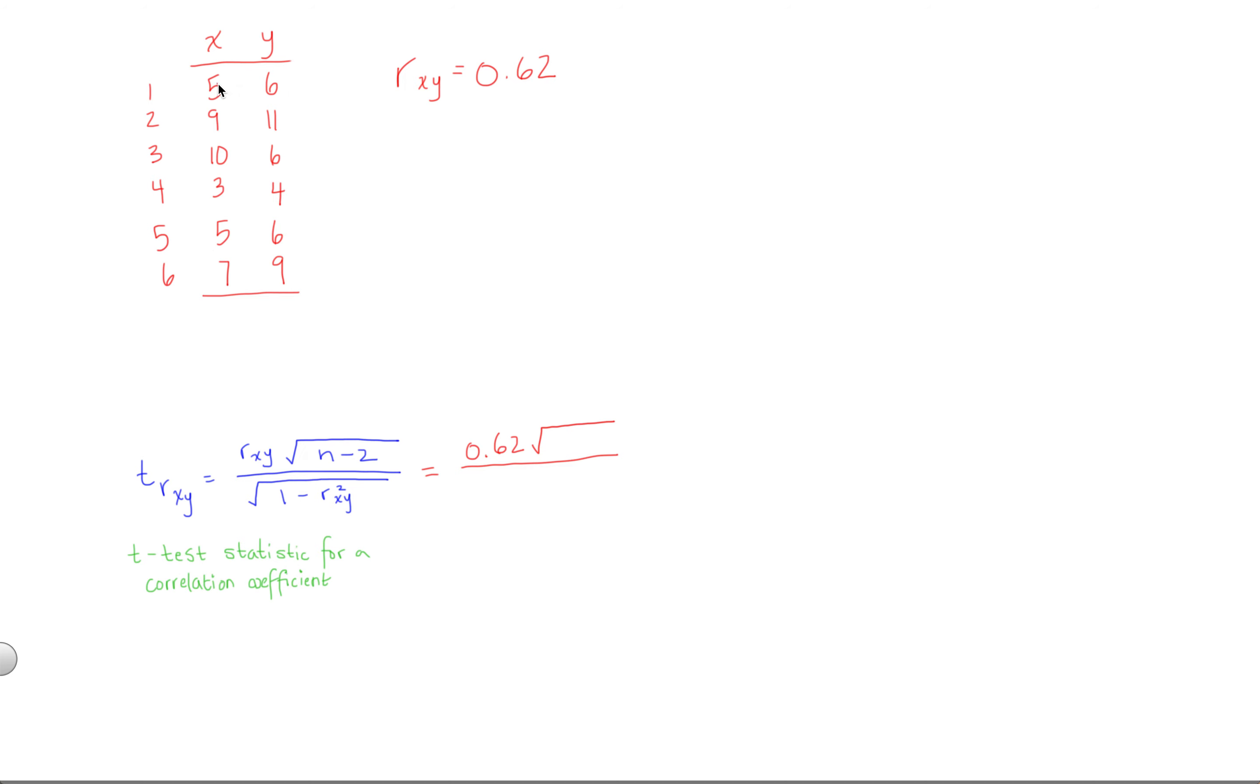Don't get fooled. Just because we have 12 numbers here, it doesn't mean there's 12 people in the study. Each participant is measured twice in a correlational study, once on variable x and once on variable y. So, in this case, we have 6 people in the study.